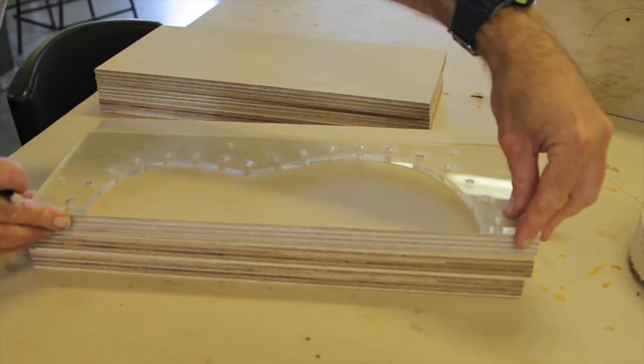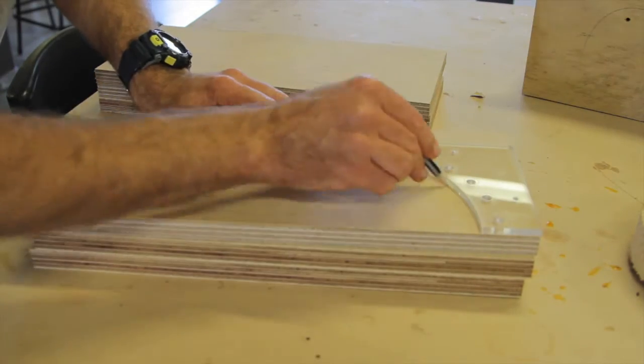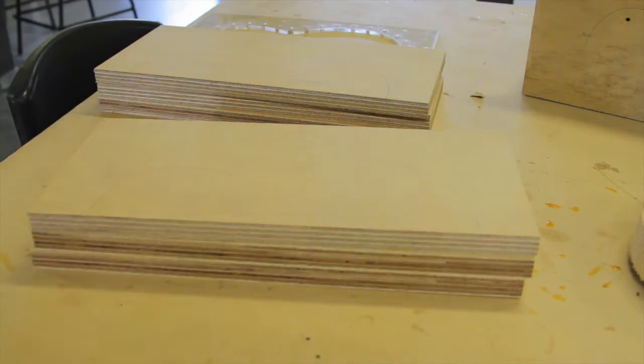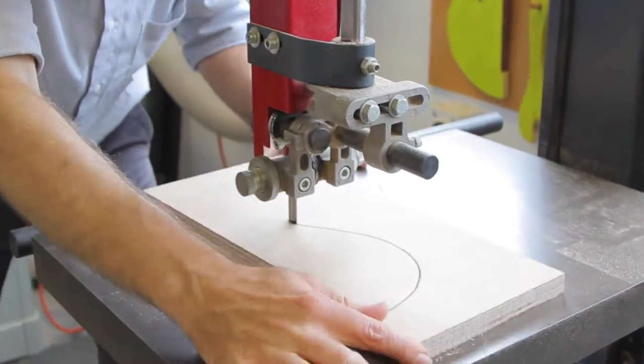Using six bits of 19mm thick plywood cut to the same dimensions as your template, draw the outline profile for your ukulele on each one. Then go and cut them on the bandsaw as close as you can to the line.